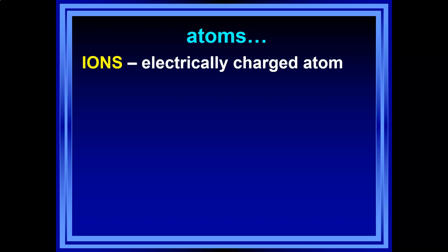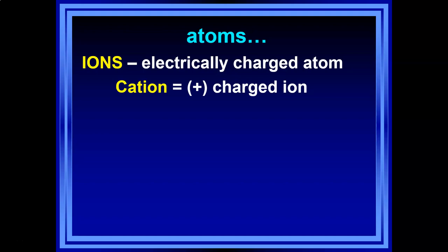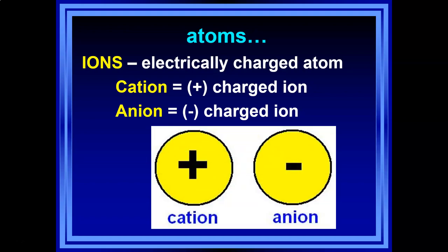When the number of protons equals the number of electrons, the atom is neutral — everything cancels out. But you can change the number of electrons, and when you do, you create ions. An ion is an atom with a charge. A cation is a positively charged ion; an anion is a negatively charged ion. Cation is written with a little positive, anion with a negative, indicating they don't have an equal number of protons and electrons.